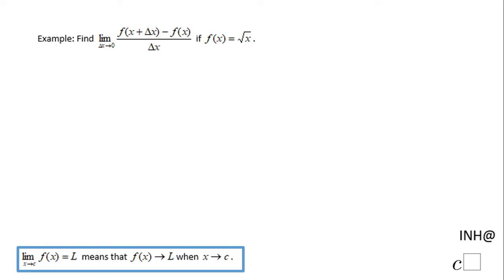Welcome back to C square. In this example we have to evaluate this limit: the limit as Delta x approaches zero of f of x plus delta x minus f of x over delta x, where f of x is the square root of x.